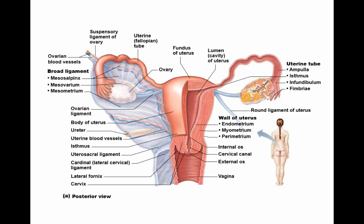Looking at the image, we can appreciate the lining — the endometrium — then the very thick layer of smooth muscle tissue, the myometrium, and the outer dense connective tissue plus a layer of simple squamous cells allowing for serous fluid secretion, which is the perimetrium.